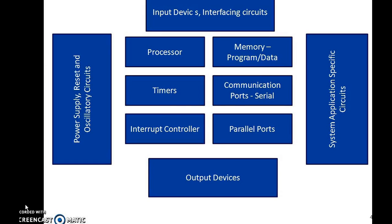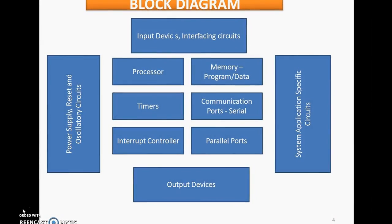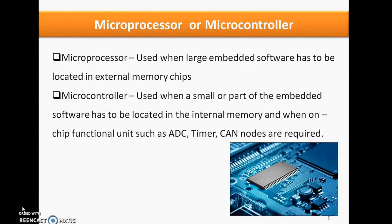An outline of embedded hardware components includes processor, timers, ports, memory, input devices, output devices, power supply, reset circuitry, oscillatory circuitry, and application-specific circuits. A processor is used when large embedded software must be located in external memory chips and for designing sophisticated embedded systems. A controller is used when the application requires on-chip functional units such as timers, ADC, CAN nodes, or for designing simpler applications.